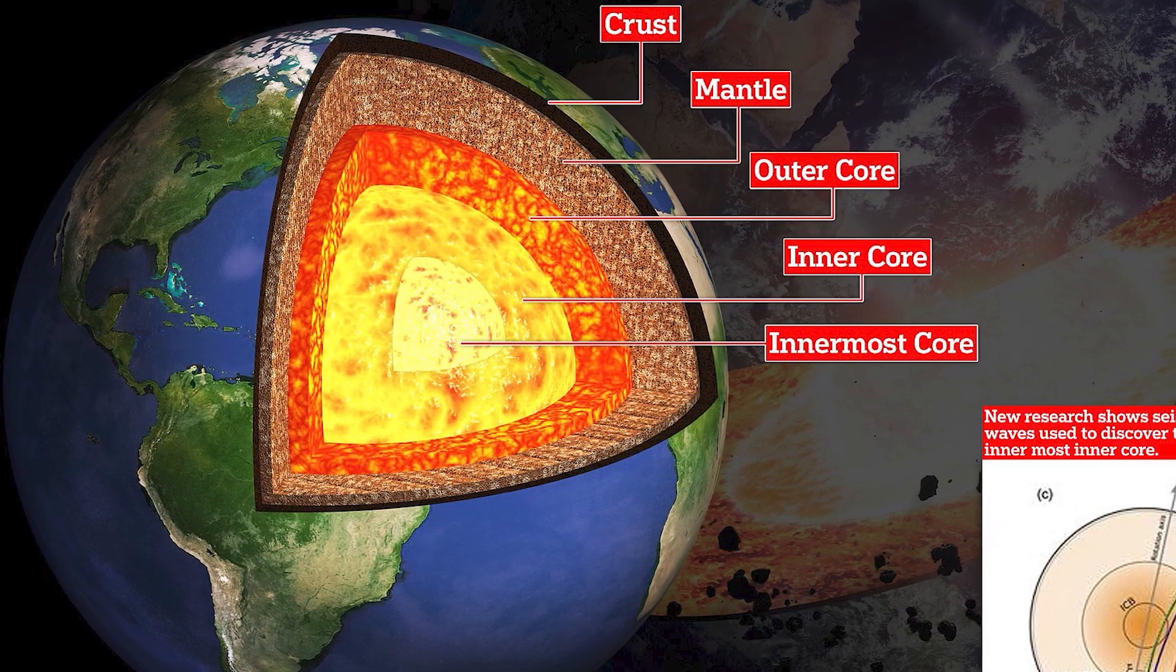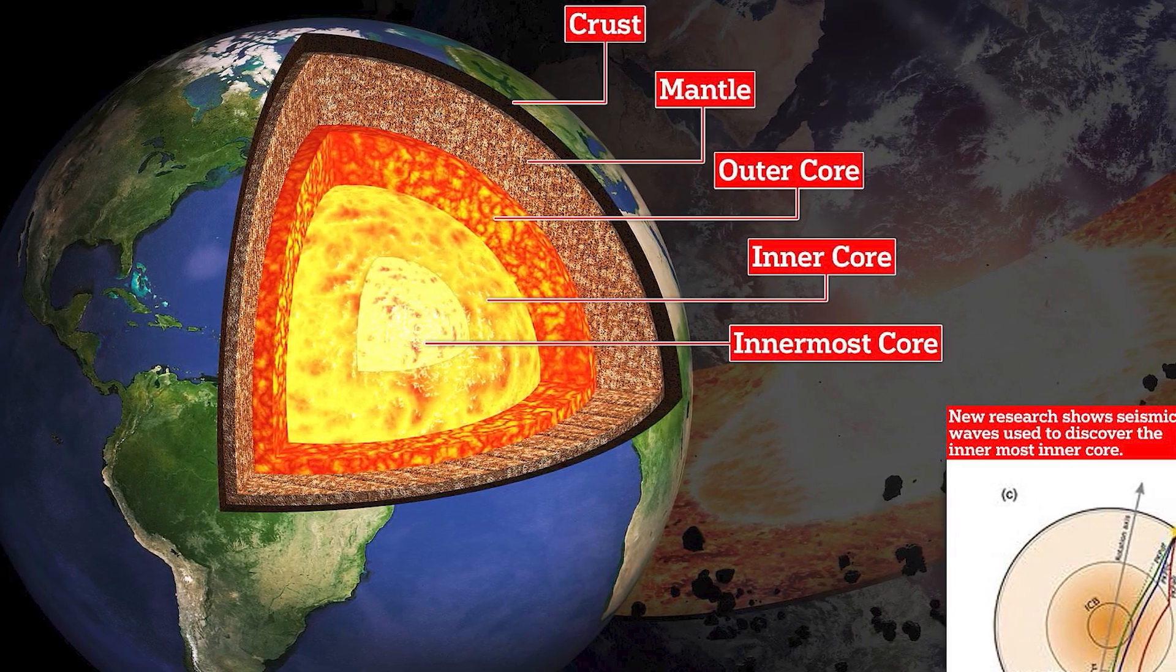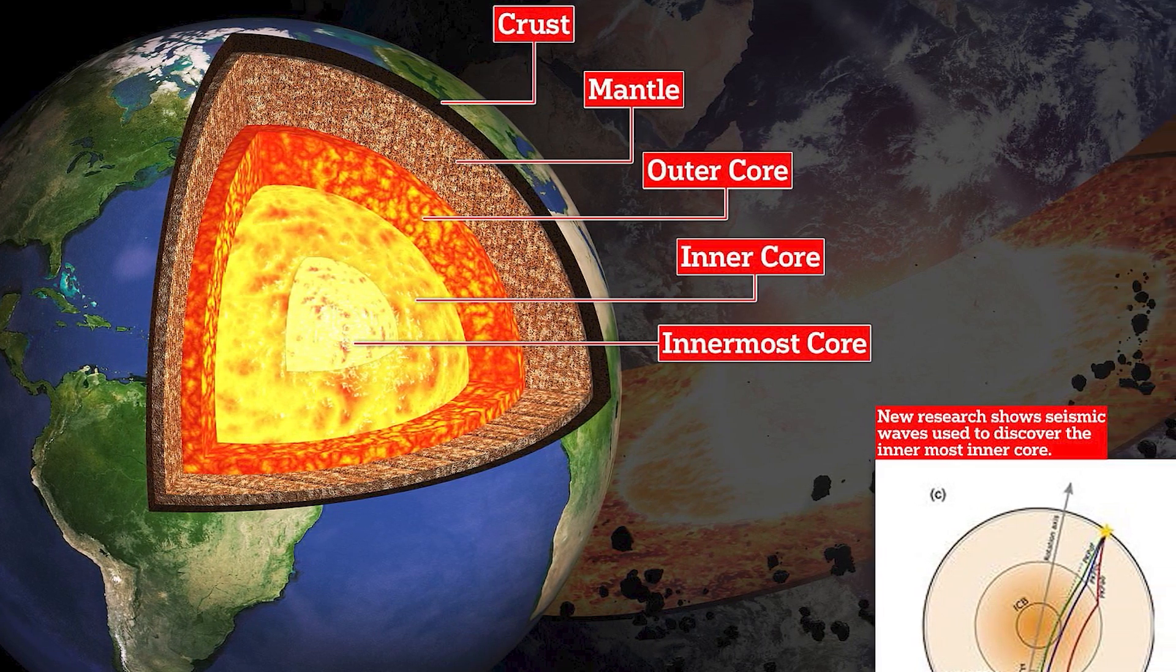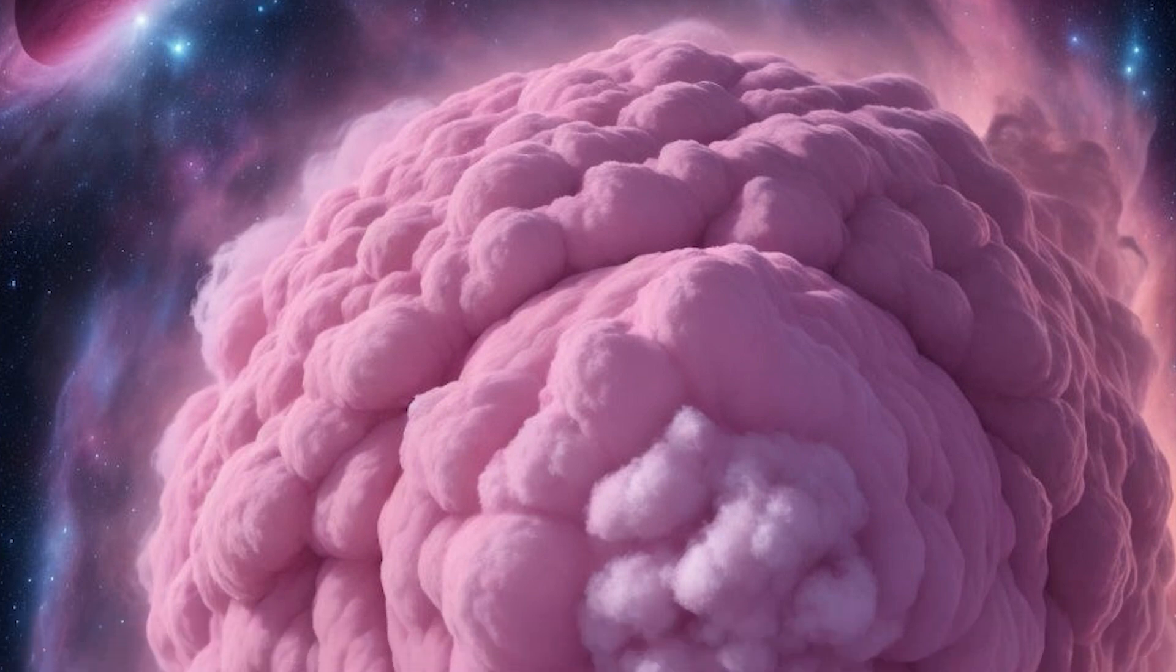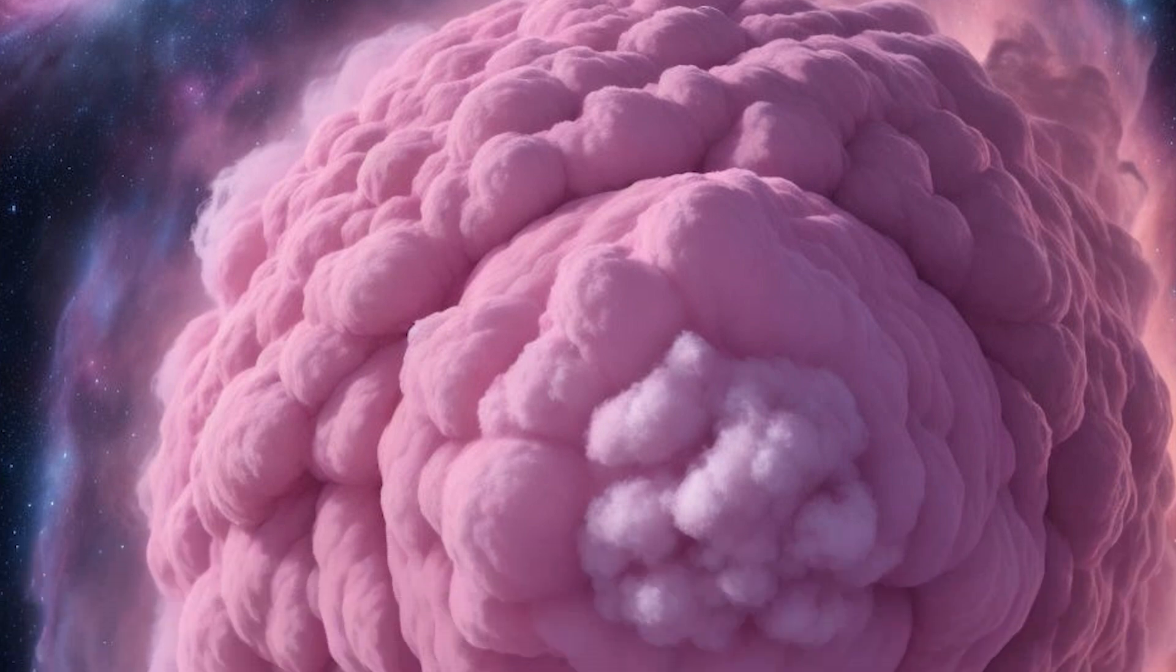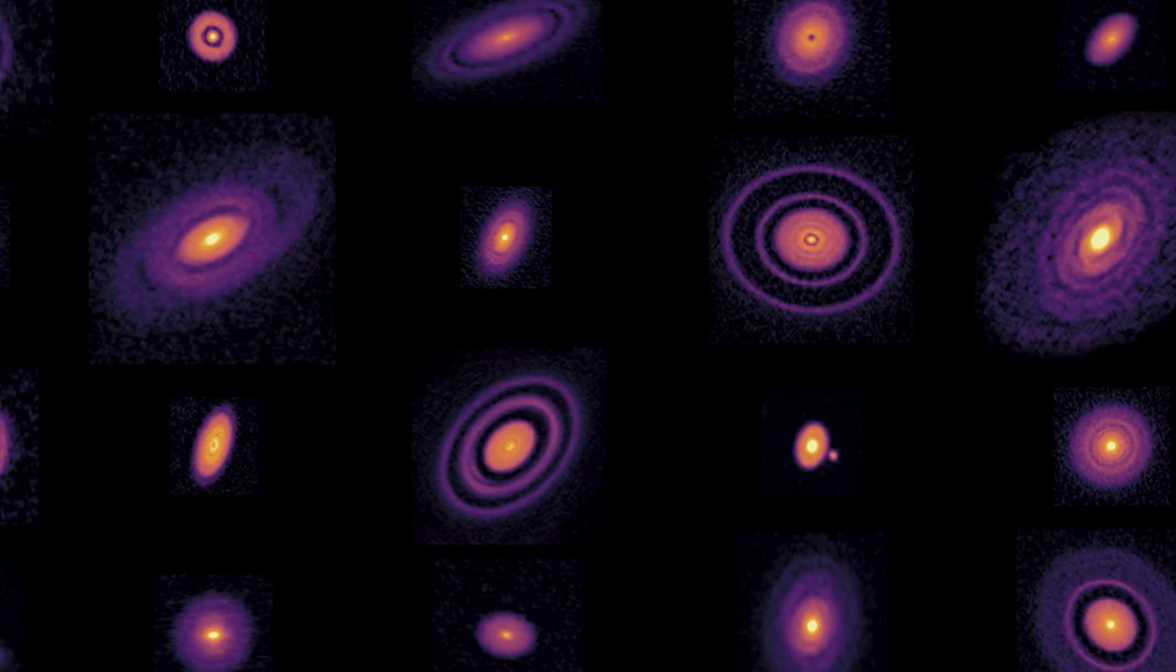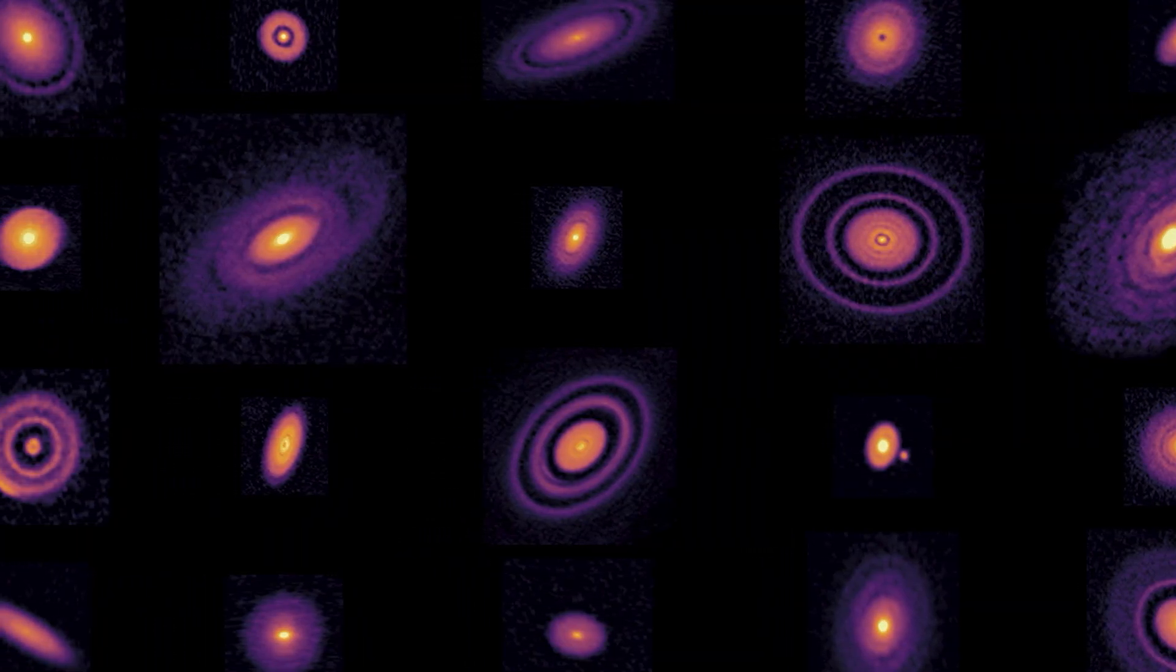What's really mind-boggling is that the core of WASP-107b is just four times larger than Earth's, when it should be around 10 times that size. Because of this, the planet is super light and fluffy, almost like a marshmallow floating in space. It's fascinating to scientists because it challenges what we thought we knew about how big gas giants form.